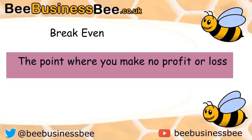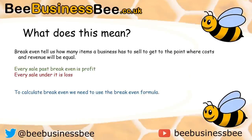So what is breakeven? Breakeven is a point where you make no profit or no loss — so you make a big fat zero. Breakeven tells us how many items a business has to sell to get to a point where the costs and revenue will be equal, i.e. you make no profit. Every sale that you make past your breakeven point is going to be profit. Every sale you make under your breakeven point is going to be loss.